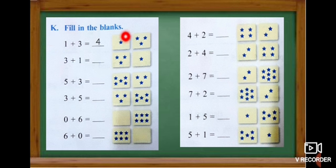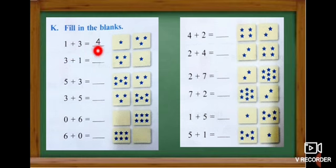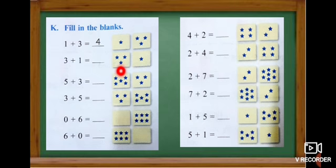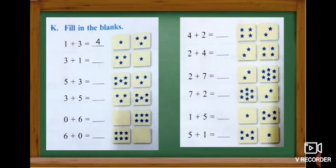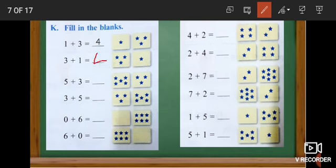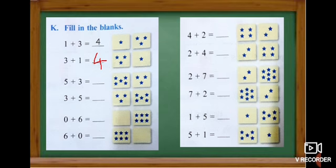Part K — fill in the blanks. How many stars is here? One star. And look at the next box — how many stars? One, two, three. So they write number three first. And look at the next box — how many stars? Only one star. Here they change the order of the number: they write three first and then they write one. The answer is four. The order is only changed, the answer will be the same.